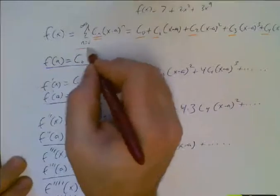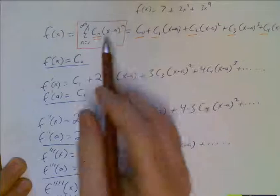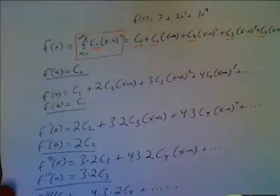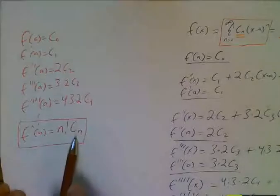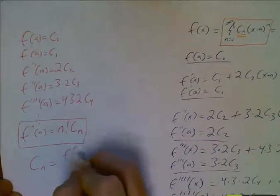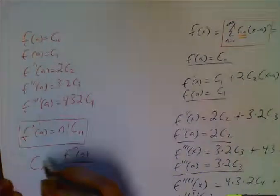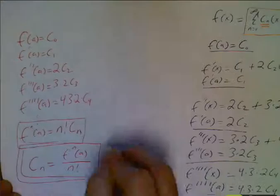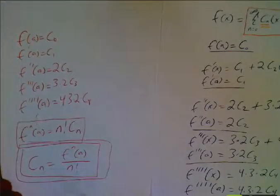Okay, so if you put in zero, you're here. The zeroth derivative is your original. Zero factorial is one c sub zero. Put in one. My first derivative is one factorial c sub one. My third derivative, f triple prime of a, is going to be three factorial times c sub three.